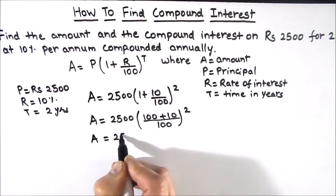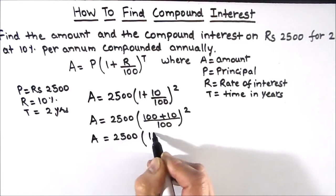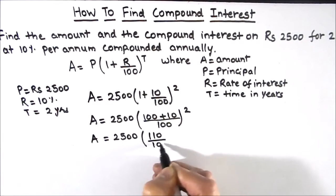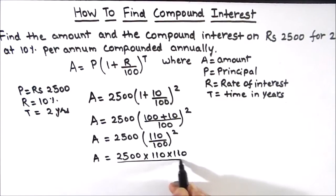So amount will be equal to 2500 times 110 upon 100 whole square. Now we'll expand the square so that will be 110 times 110 divided by 100 times 100.